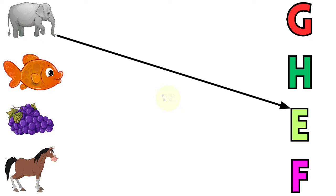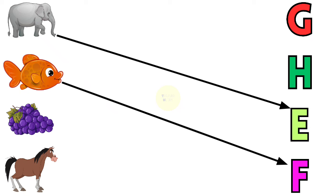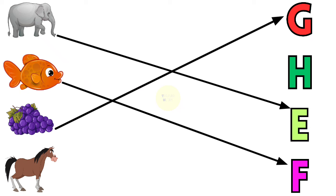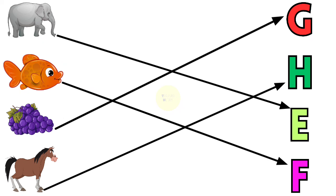E for elephant, F for fish, G for grapes, H for horse.